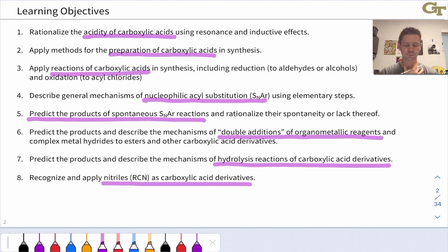We'll look at the general mechanisms of SNAr reactions. We'll learn how to predict whether a given SNAr reaction is spontaneous or not based on the strength of the nucleophile versus the leaving group ability of the leaving group.